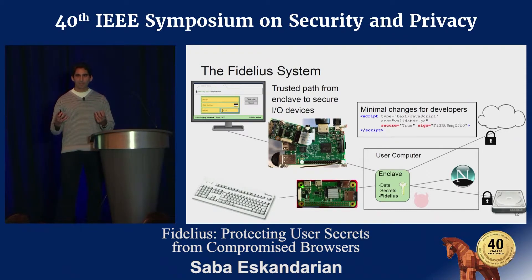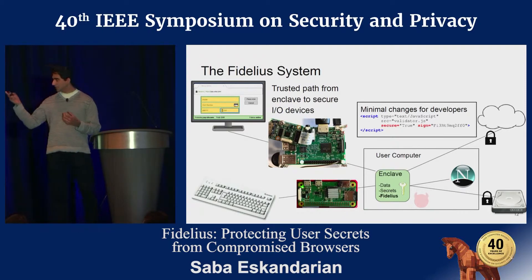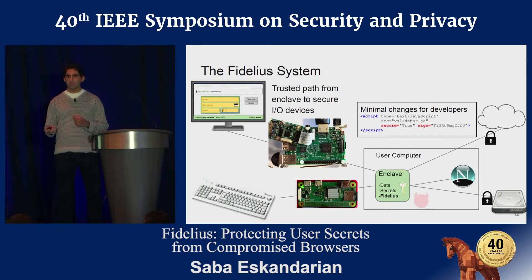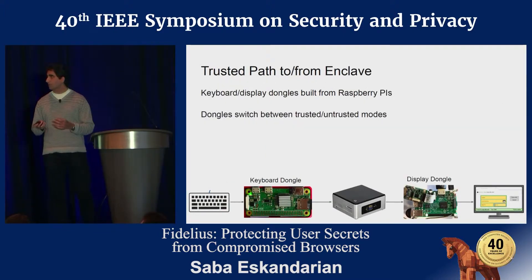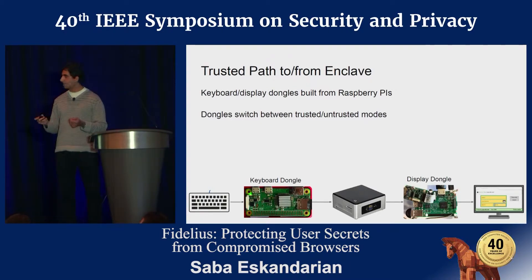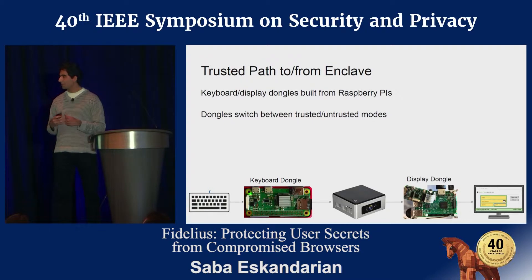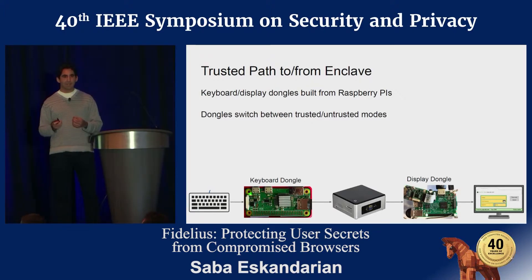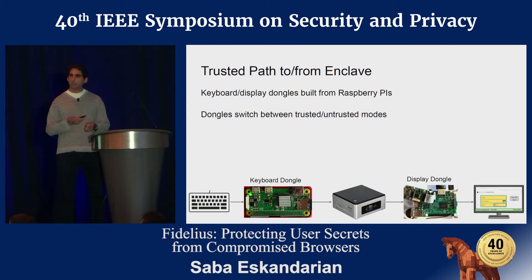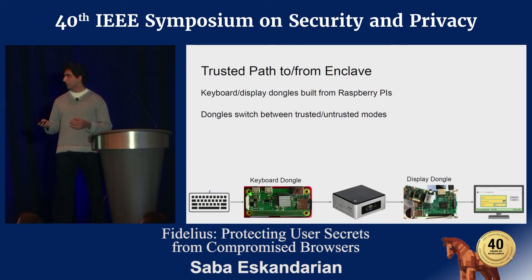We need a way for users to interact with the enclave. We built these dongles — you can see pictures of them — implementing a trusted path between the enclave and the user. They're built out of Raspberry Pis attached to off-the-shelf keyboards and displays. In untrusted mode, dongles act as pass-through devices: keyboard presses are forwarded to the computer, and HDMI output from the computer is passed straight through to the display.